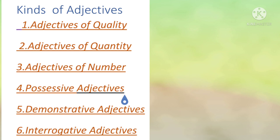Now let us see the kinds of adjectives. The kinds of adjectives are six. First one is adjectives of quality, second one is adjectives of quantity, third one is adjectives of number, fourth one is possessive adjectives, fifth one is demonstrative adjectives, and sixth one is interrogative adjectives.